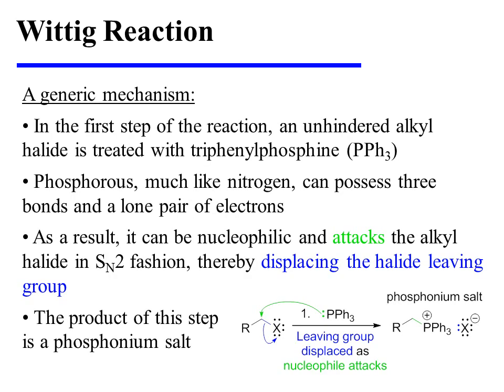In the first step of the reaction, an unhindered alkyl halide is treated with triphenylphosphine. Phosphorus, much like nitrogen, can possess three bonds and a lone pair of electrons. As a result, it can be nucleophilic, and it attacks the alkyl halide in SN2 fashion, thereby displacing the halide leaving group. The product of this step is a phosphonium salt.